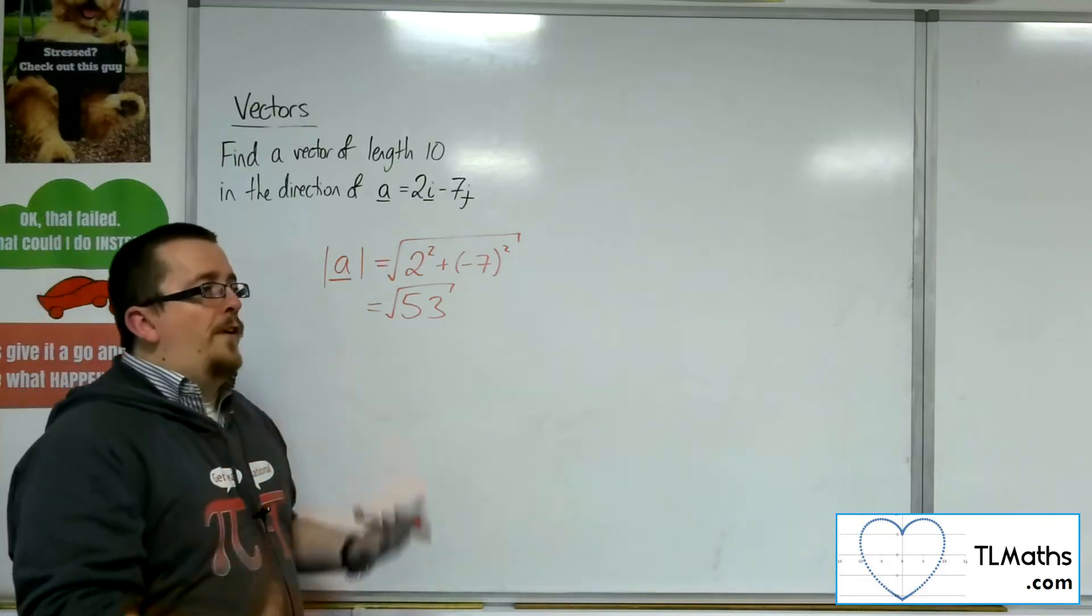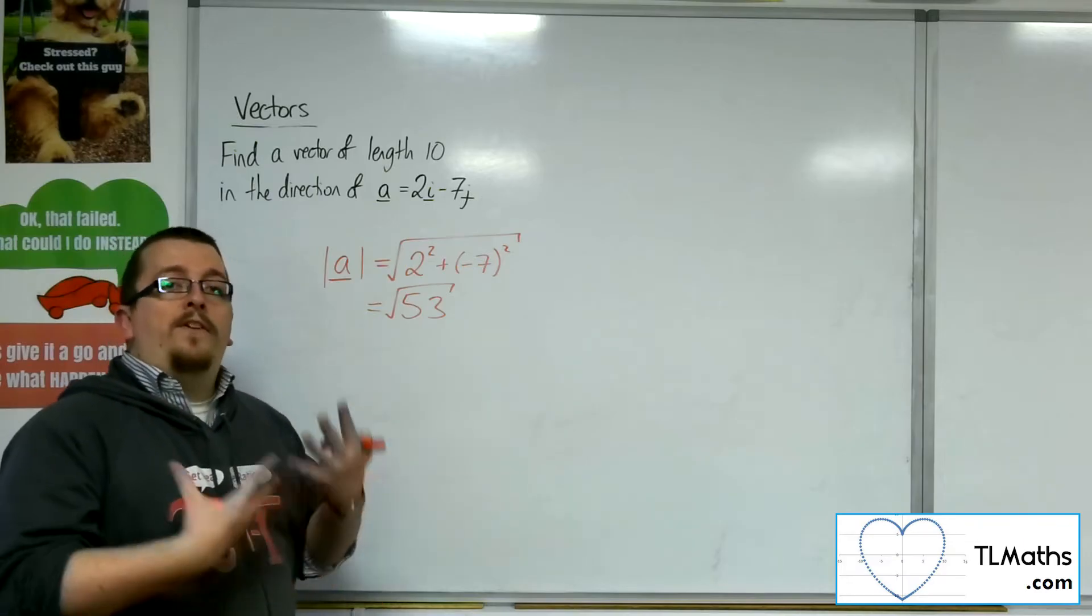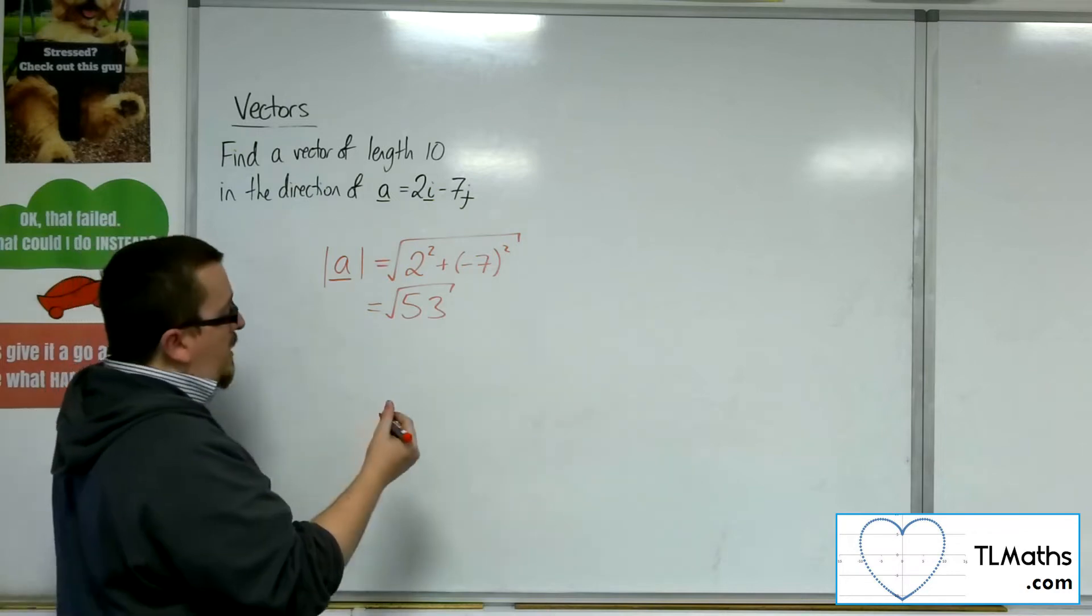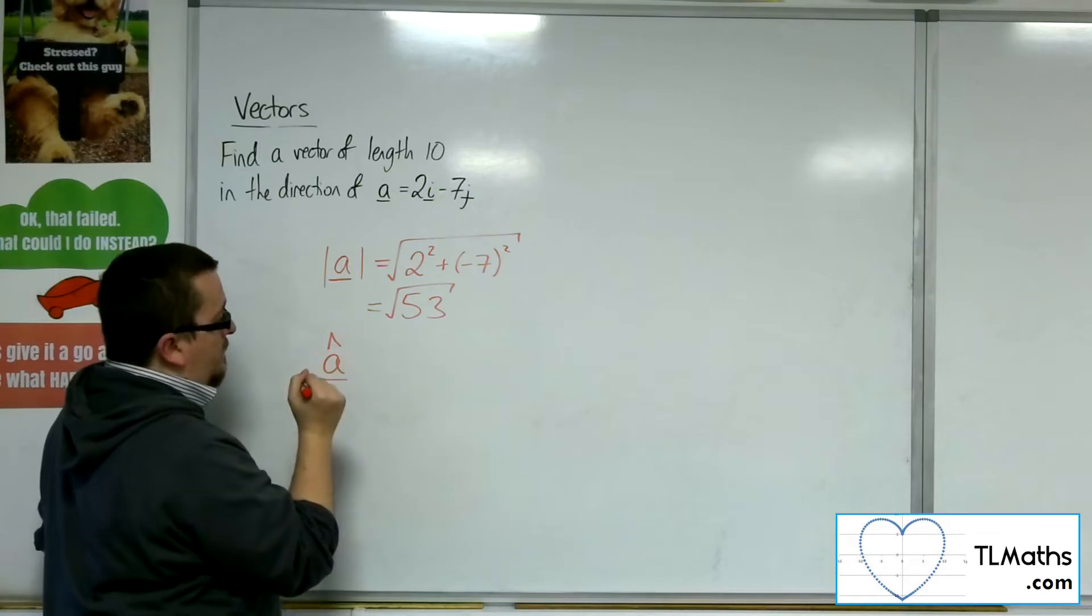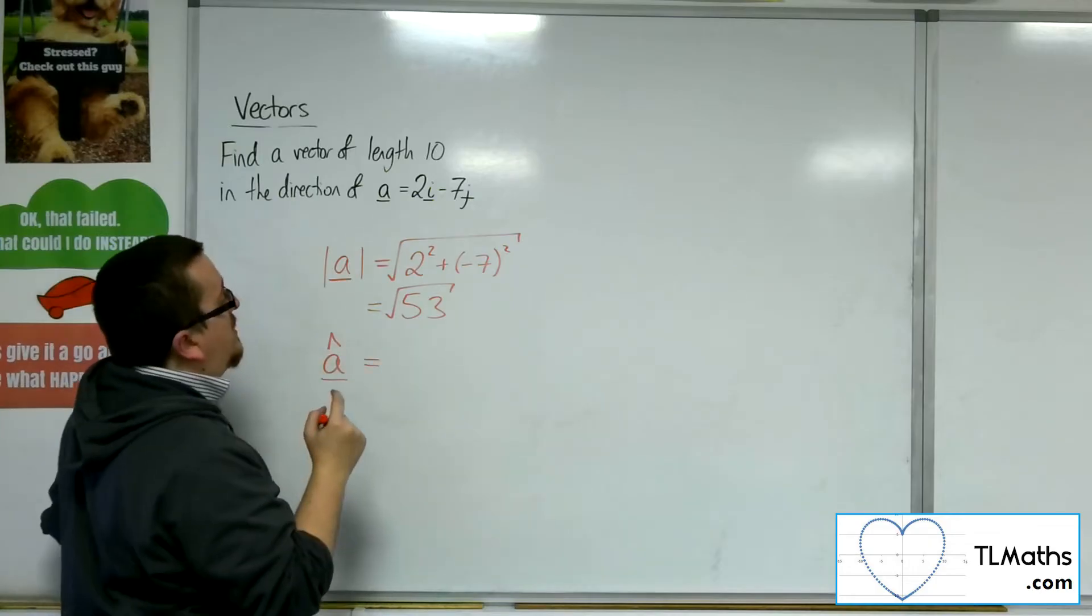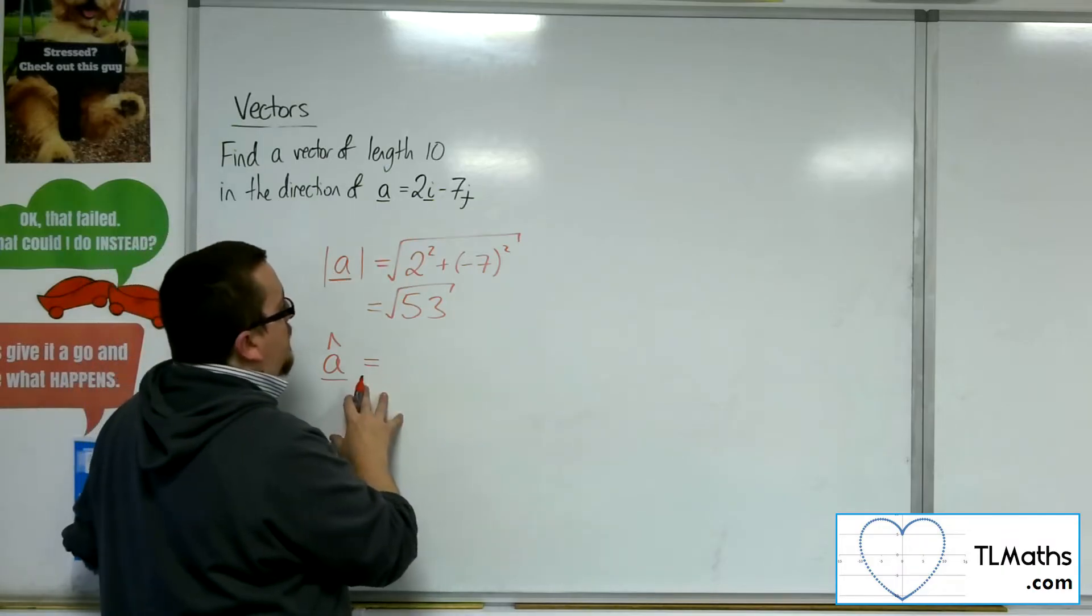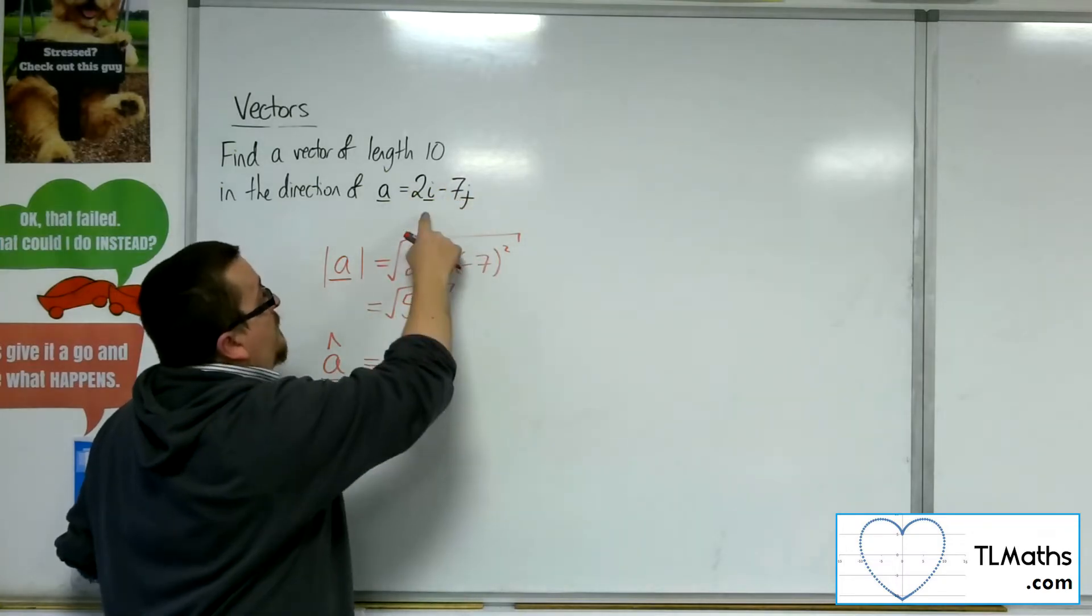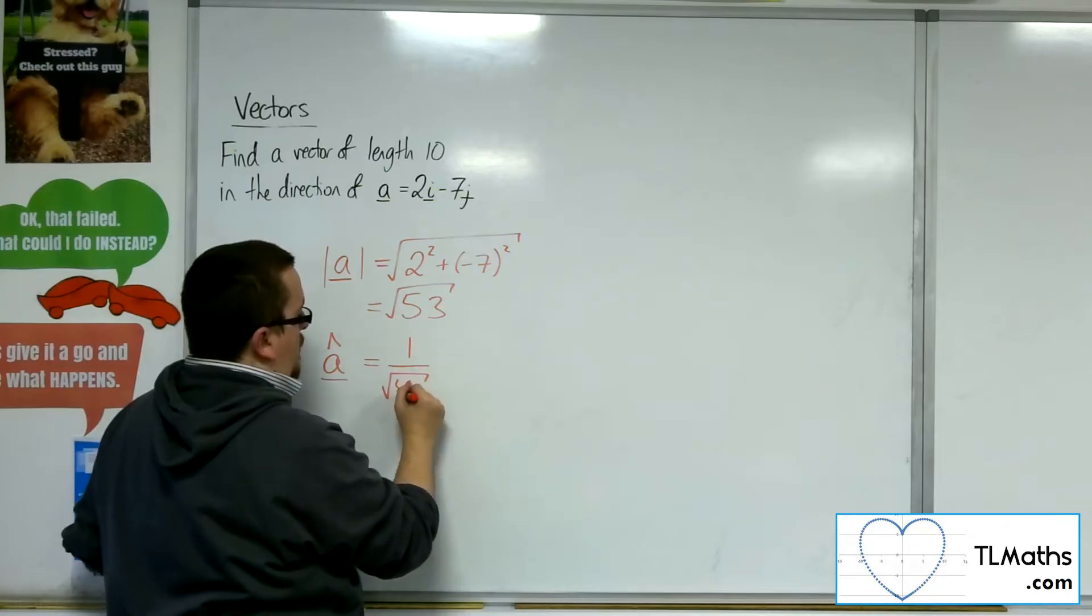So what I could do is I could find a vector that is parallel to A that is of unitary length, that is of length 1. And what I could call that is A hat. So it's got to be parallel to that vector. So it would need to be some multiple of A. Now, if I divided A by the square root of 53.